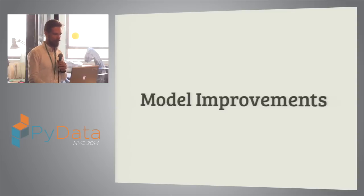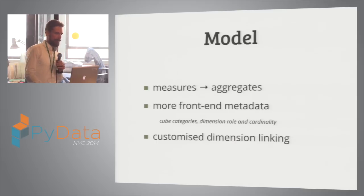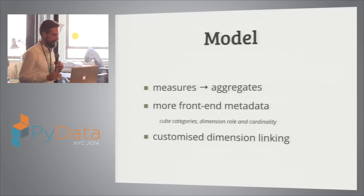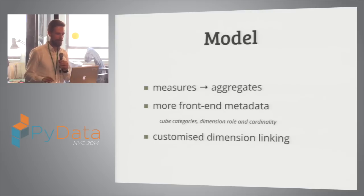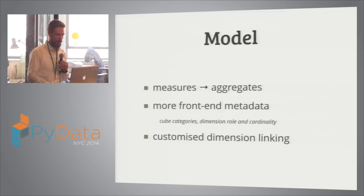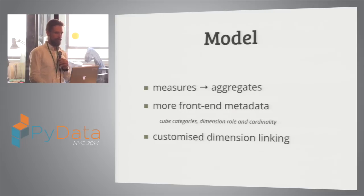So what are the model improvements in Cubes 1.0? There are three basic ones. First, we have additional metadata and we split the measures and aggregates. Aggregates are no longer generated implicitly from the list of measures — you define them explicitly. There is also more frontend metadata to be usable by the reporting apps, and you can link the dimensions within the context of the cube.